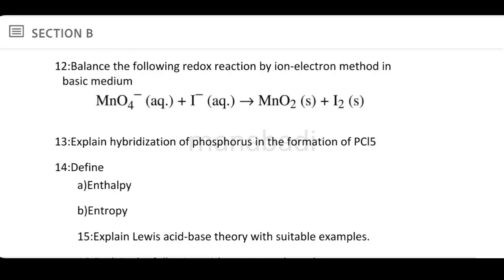Define enthalpy and entropy. Enthalpy is a simple definition: enthalpy is equal to internal energy plus the product of pressure and volume. Entropy is a measure of the randomness of a substance — a very simple definition.